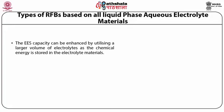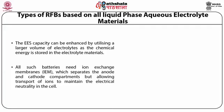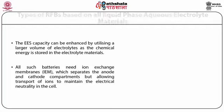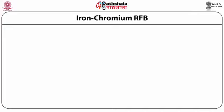Types of RFBs based on all liquid phase aqueous electrolyte materials. The EES capacity can be enhanced by utilizing a large amount of electrolytes as the chemical energy is stored in the electrolyte materials. All such batteries need ion exchange membranes (IEM) separating the anode and the cathode compartments, but allowing the transport of ions to maintain the electrical neutrality in the cell.